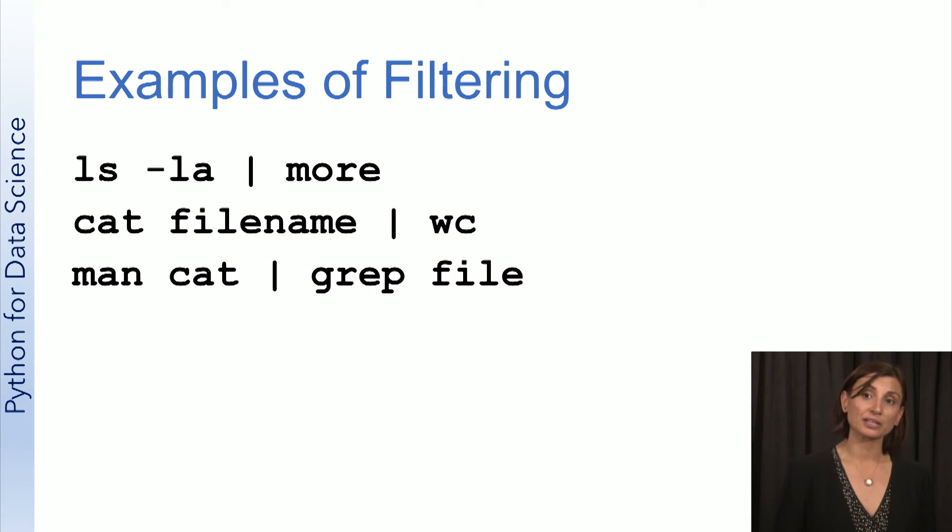The next one is the manual page for the cat command piped into a grep file. What grep does here is it's going to look for the occurrence of file in each line of the manual page for cat. So you'll have the output of man cat and be able to see only the lines in that manual page that involves the file text in it.